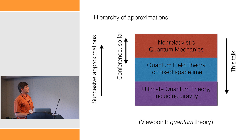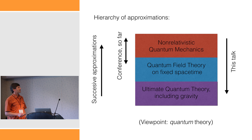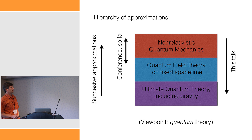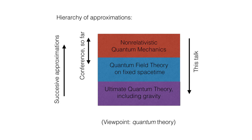We start with the ultimate quantum theory, which we're trying to figure out. And then, through successive approximations, reach the level of non-relativistic quantum mechanics. A lot of the conference so far has been kind of bouncing back and forth in this regime — a lot of it on the non-relativistic end, some dealing with quantum field theory issues. I'm going to try to drive towards the ultimate theory, although I don't have it in my back pocket at the moment, but I'd like to try to understand some of its properties, taking the viewpoint that we really are talking about a quantum theory.